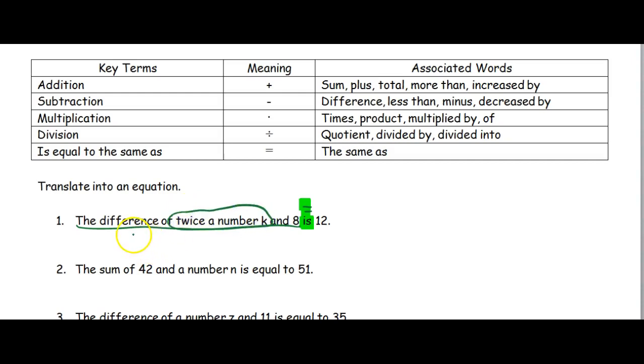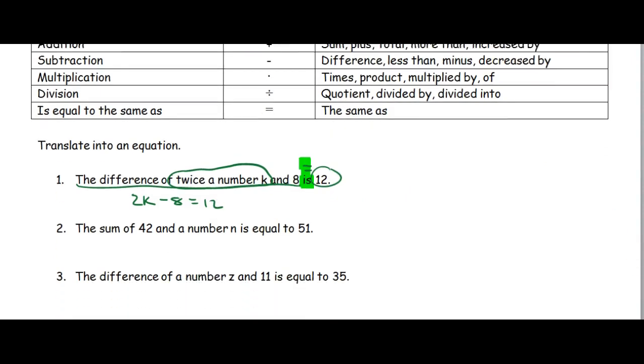Twice a number k means we're going to do 2 times k, and the difference between 2k and 8 would be 2k minus 8. And I have my equal sign, and what does it equal? 12.